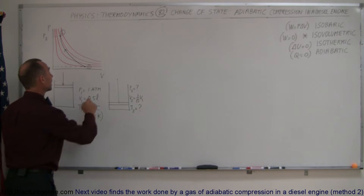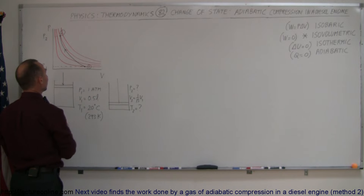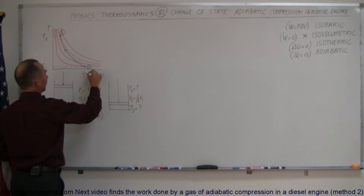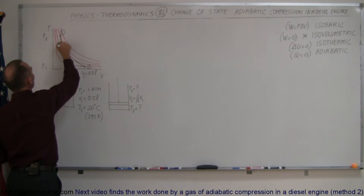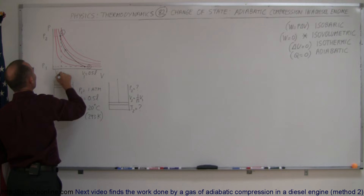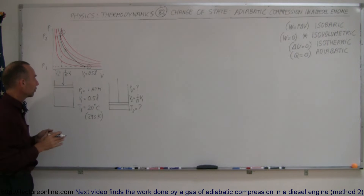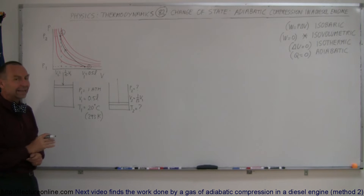We're going from a state where pressure equals 1 atmosphere and volume 1 is 0.5 liters, and compressing it to a state where volume 2 is equal to 1/15th of the initial volume. That's called the compression ratio — compressed to 1/15th of its original volume. And we're supposed to find the work done in that process.